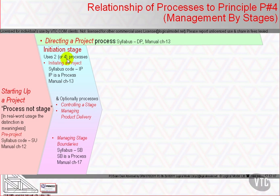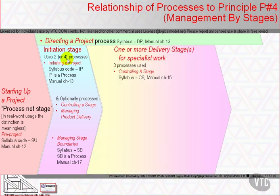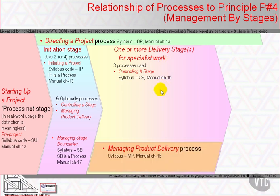After the initiation stage there are one or more delivery stages in which specialist work is carried out by team members, possibly operating through team managers using Managing Product Delivery (syllabus code MP). This process has three activities to control and report on their work, and it interacts with the project manager via Controlling a Stage (syllabus code CS, manual chapter 15).